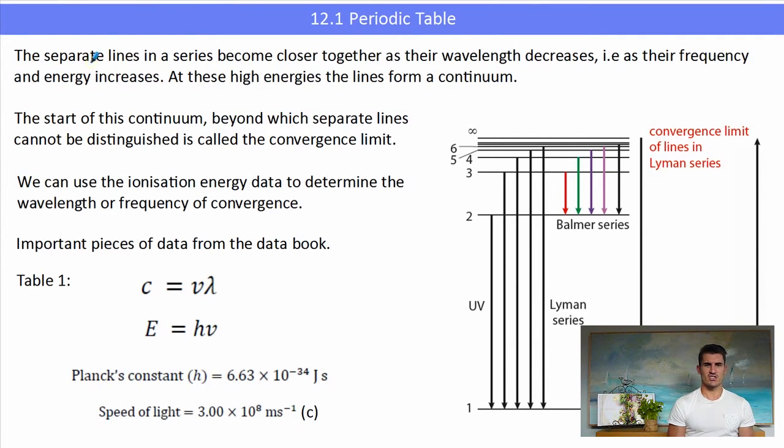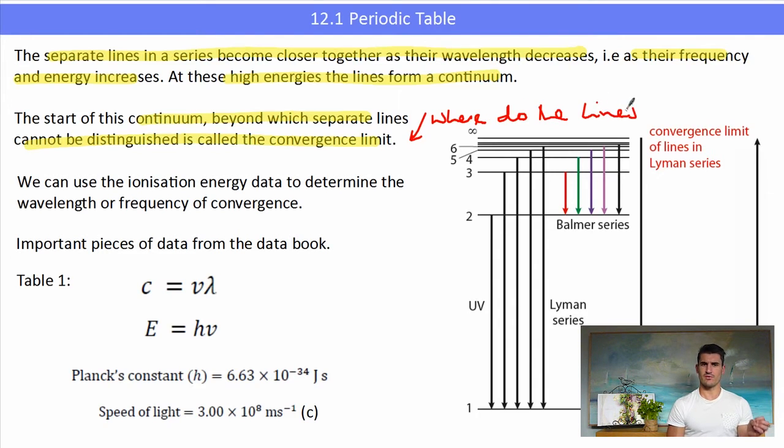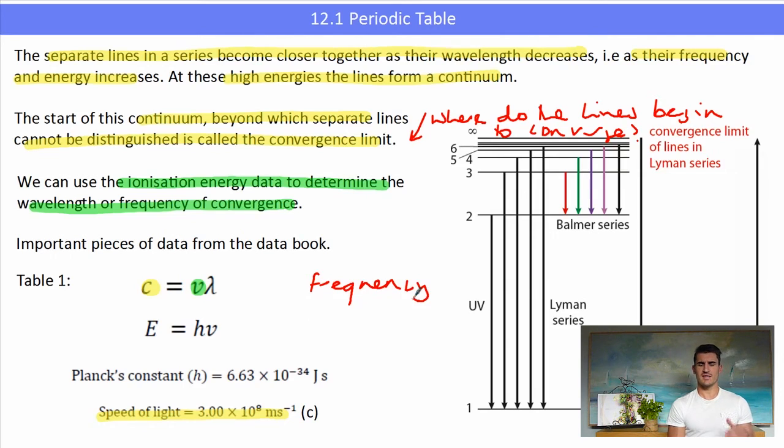Now we need to talk about Planck's constant and the energy. Now we know that separate lines in an emission spectrum show the amounts of light and as the lines become closer and closer together, we have what we call convergence. So the start of the continuum between which lines separate cannot be distinguished is called the convergence limit, where we can no longer separate individual energies. We can use the ionization energy data to determine the wavelength or the frequency of this convergence, which is what you will be asked to do. So we have two important pieces of information from the data book. We have c equals mu times lambda, c is the speed of light, which is a constant and that's given in the data book, 3.00 times 10 to the 8 metres per second. Mu is the frequency, so the frequency of the light and lambda is the wavelength, the wavelength of the light, which is measured in metres.